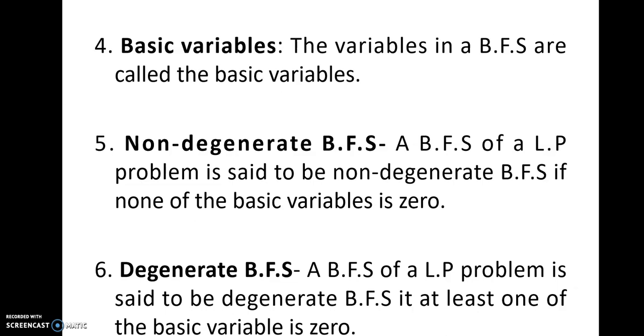Non-degenerate basic feasible solution. A basic feasible of LPP is said to be non-degenerate basic feasible solution if none of the basic variable is zero. Basic variables are those that we will add in the variable. And if no one of the basic variable is zero, then it is known as non-degenerate BFS. Degenerate just opposite of the non-degenerate. If at least one of the basic variable is zero, it is said to be a degenerate BFS.